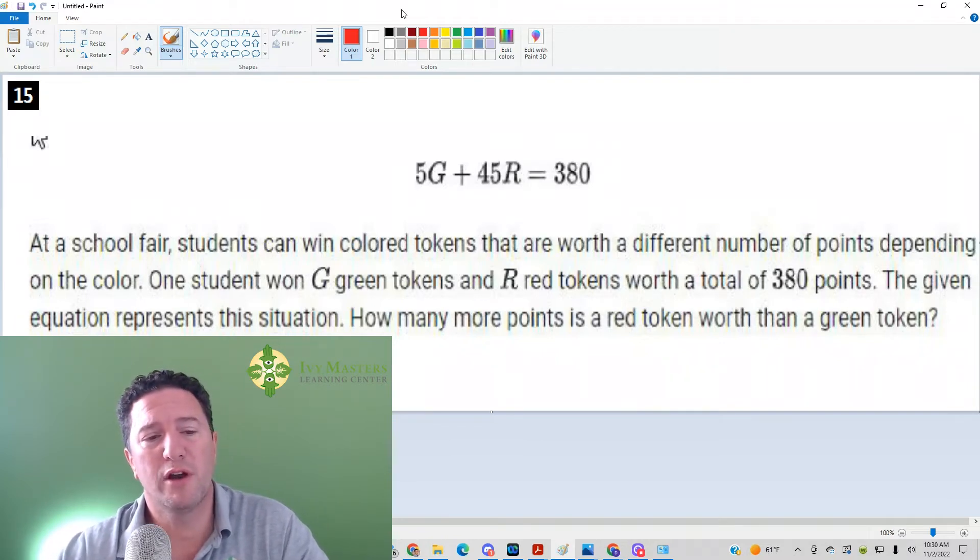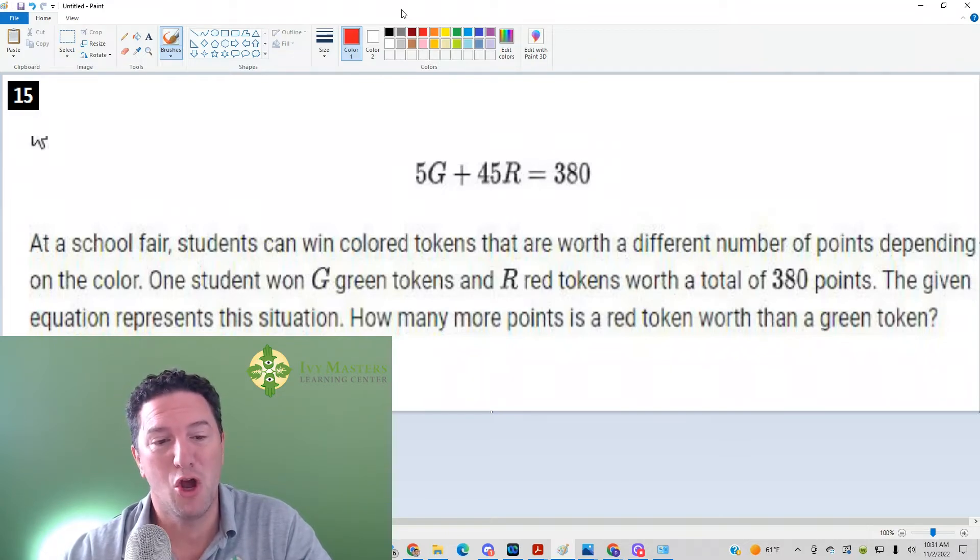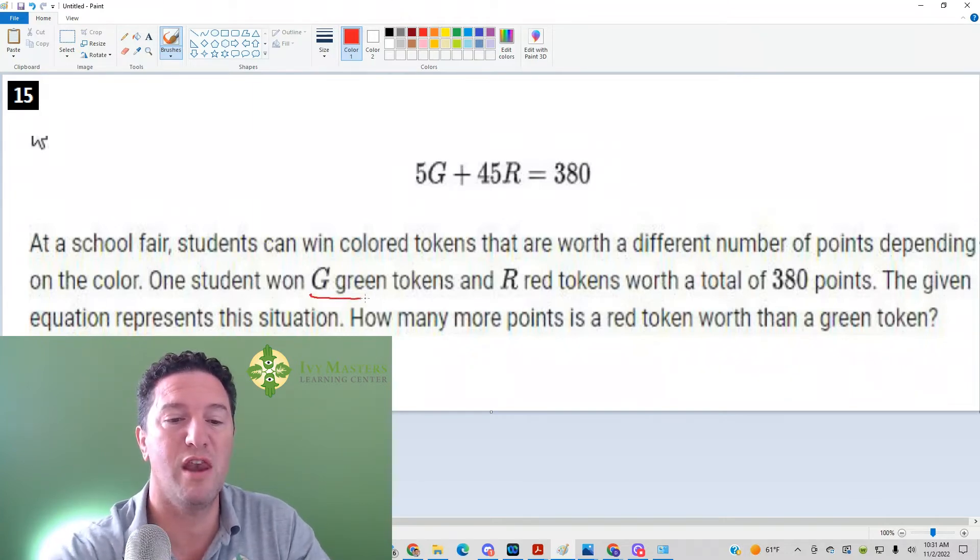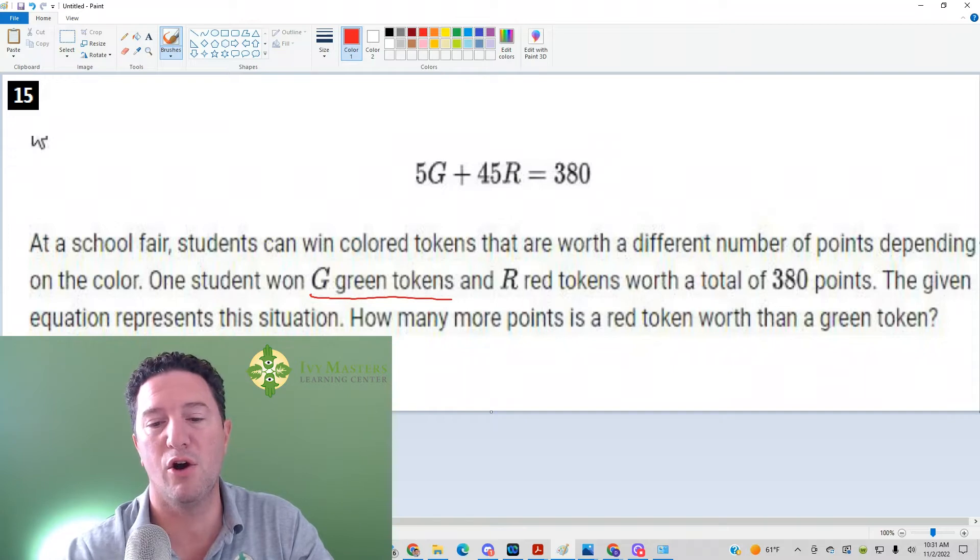Question 15 reads: at a school fair students can win colored tokens that are worth a different number of points depending on the color. One student won G green tokens and R red tokens. G stands for the number of green tokens and R for the number of red tokens, because if you put a number in place of G and R,